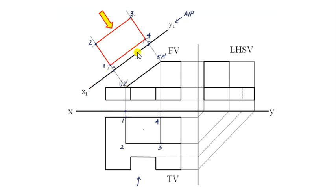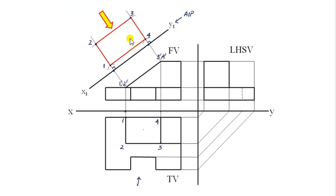To construct the auxiliary view, we draw a parallel line x1-y1 to the inclined surface. We place one leg of the compass at the intersection of x1 and a projected line, and take distance to point 1. With the same distance, we draw an arc. Similarly, we take the distance to point 2 and draw the corresponding arc. By getting all these points and joining them, we get the true shape of the inclined surface. This plane is called the auxiliary plane.